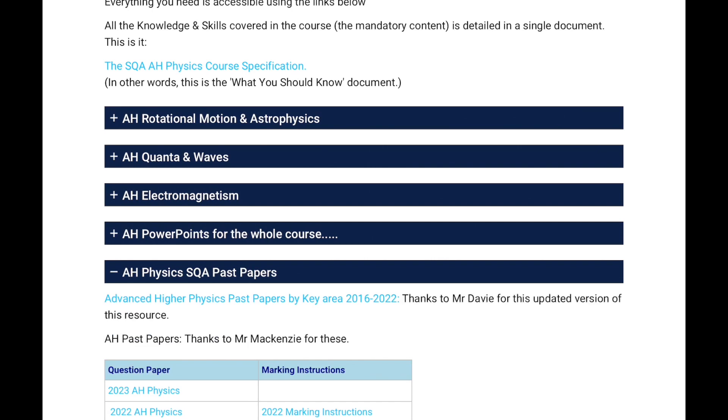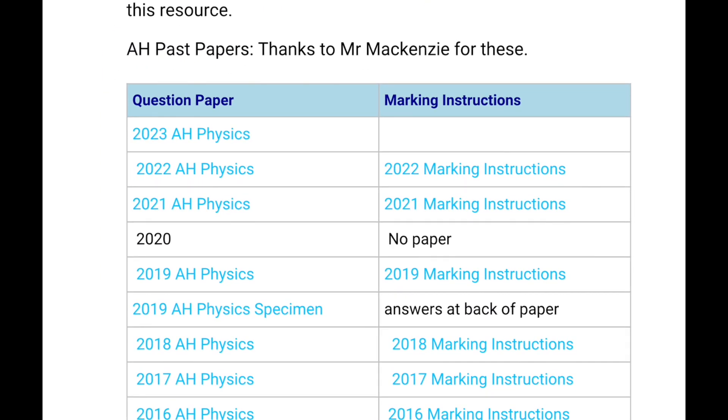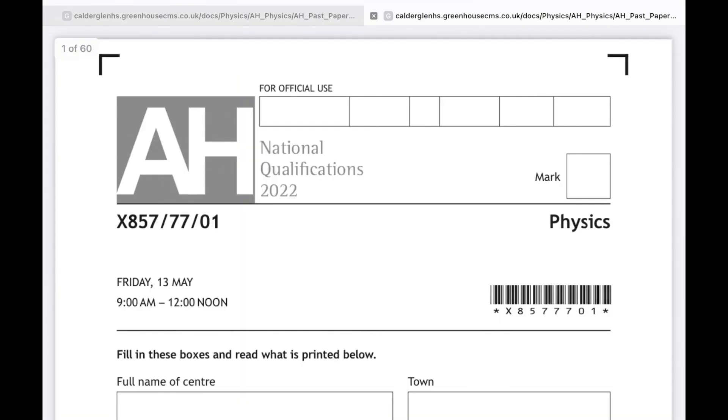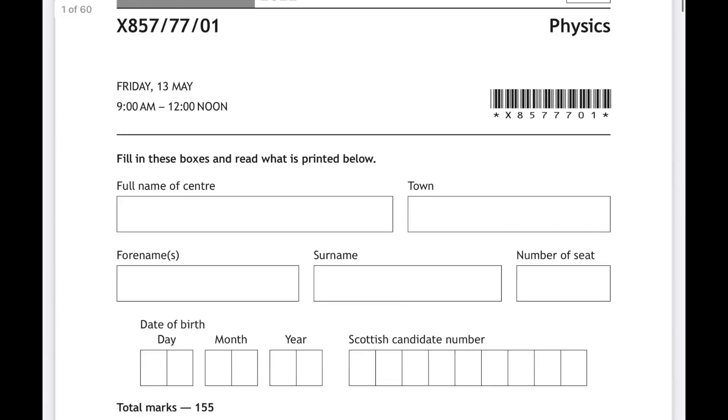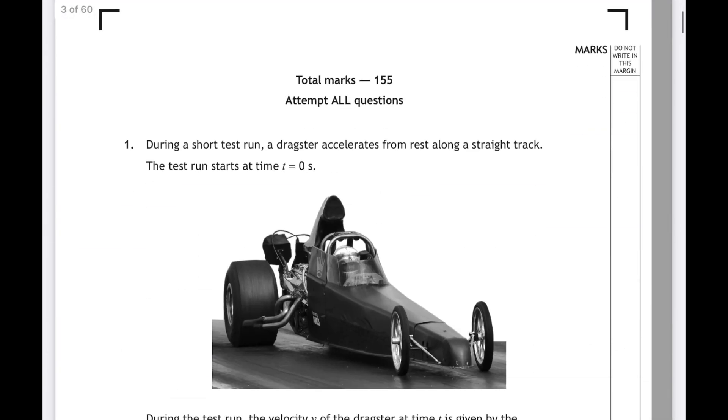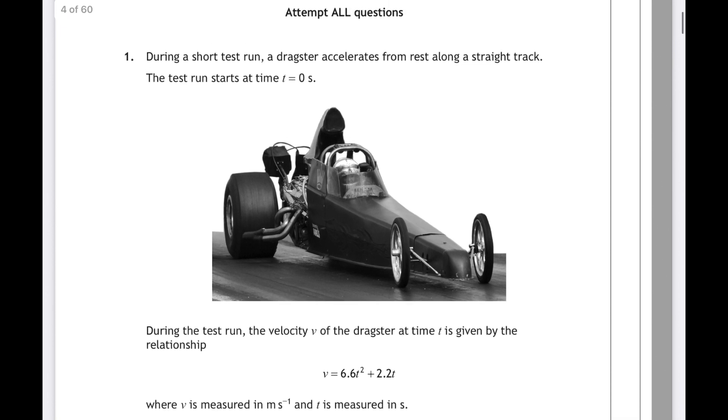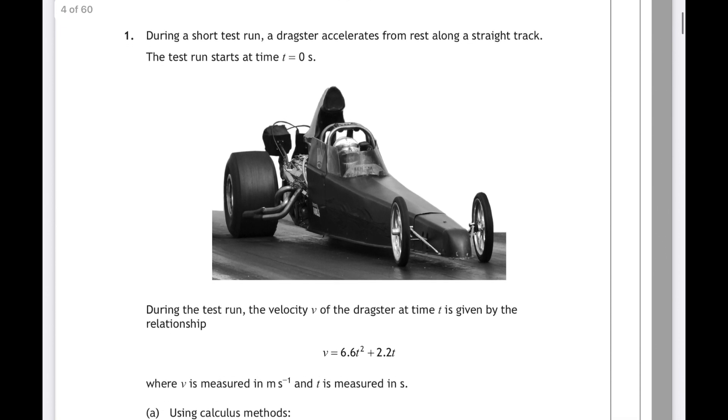So there's lots of places you can find past papers, there's the SQA website, numerous other physics teachers' websites, but this is the Calder Glen High School website. I'm just clicking on Advanced Higher Physics, past papers, and this is the 2022 paper, question one. And if you want to have a go at the question first, then make sure to pause and then come back when you're ready.